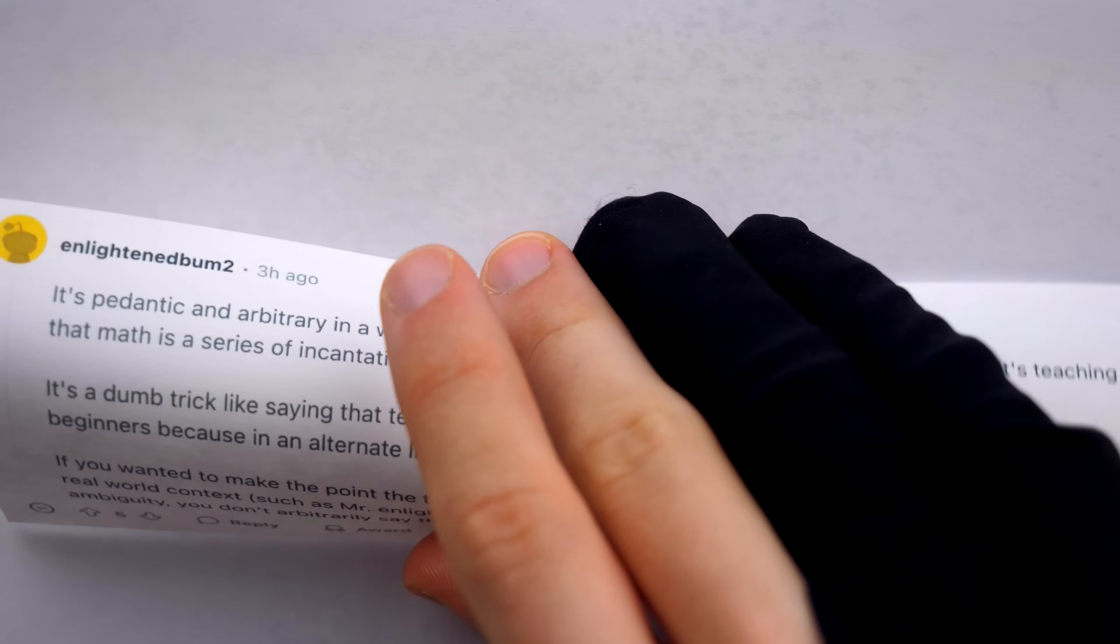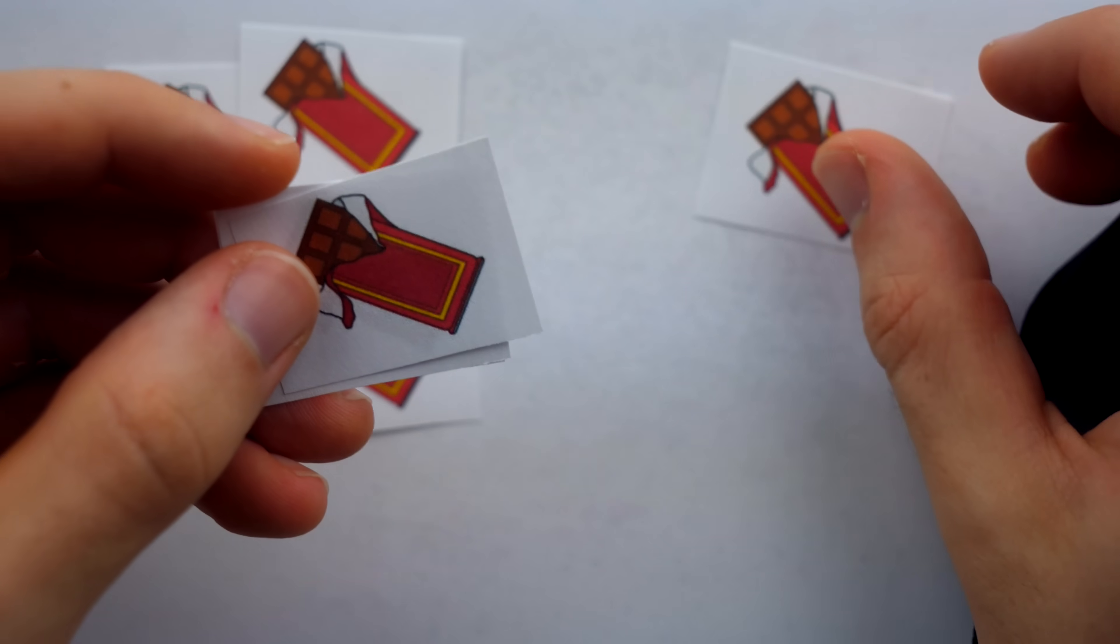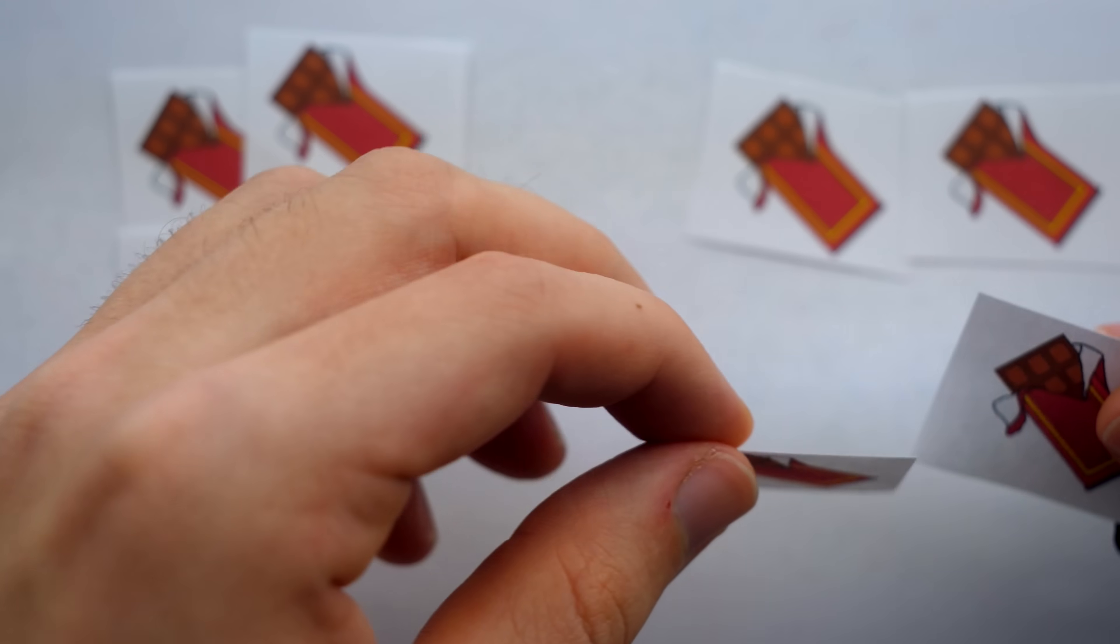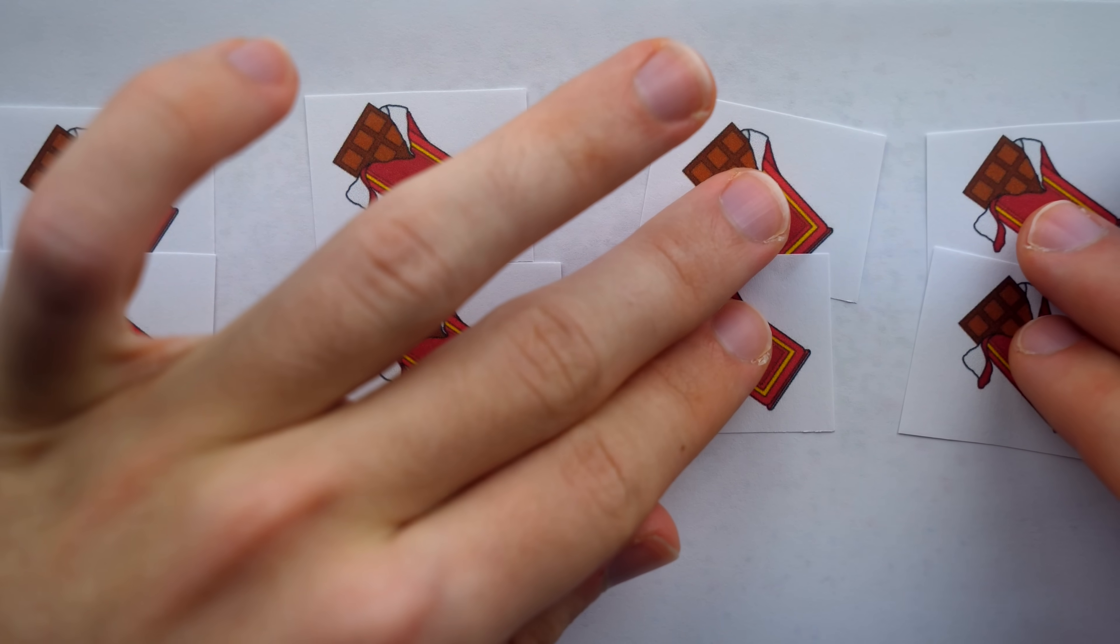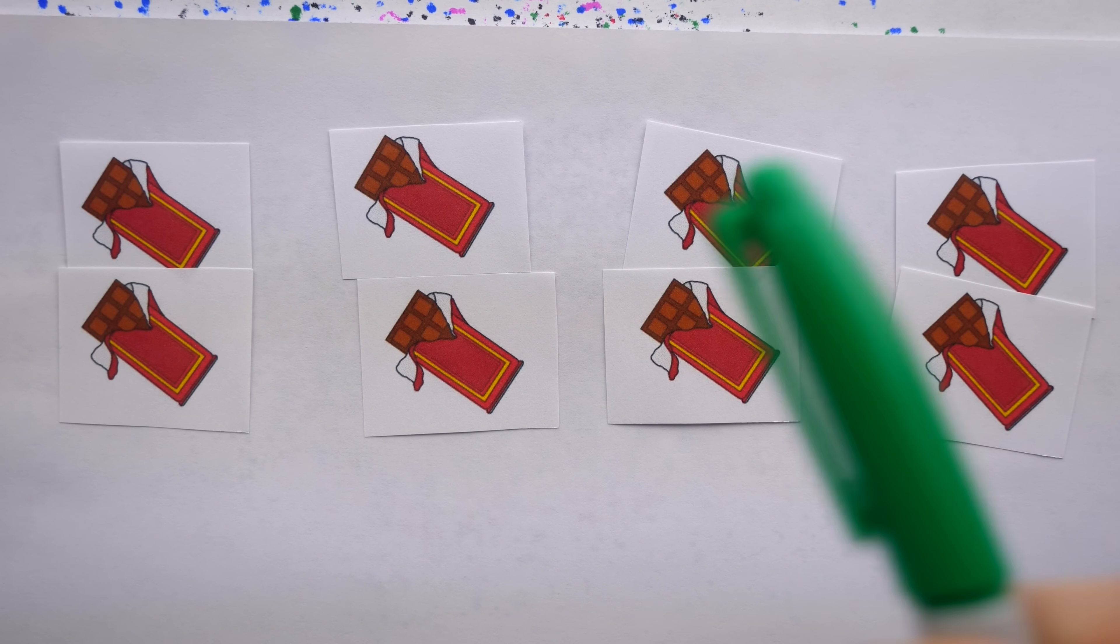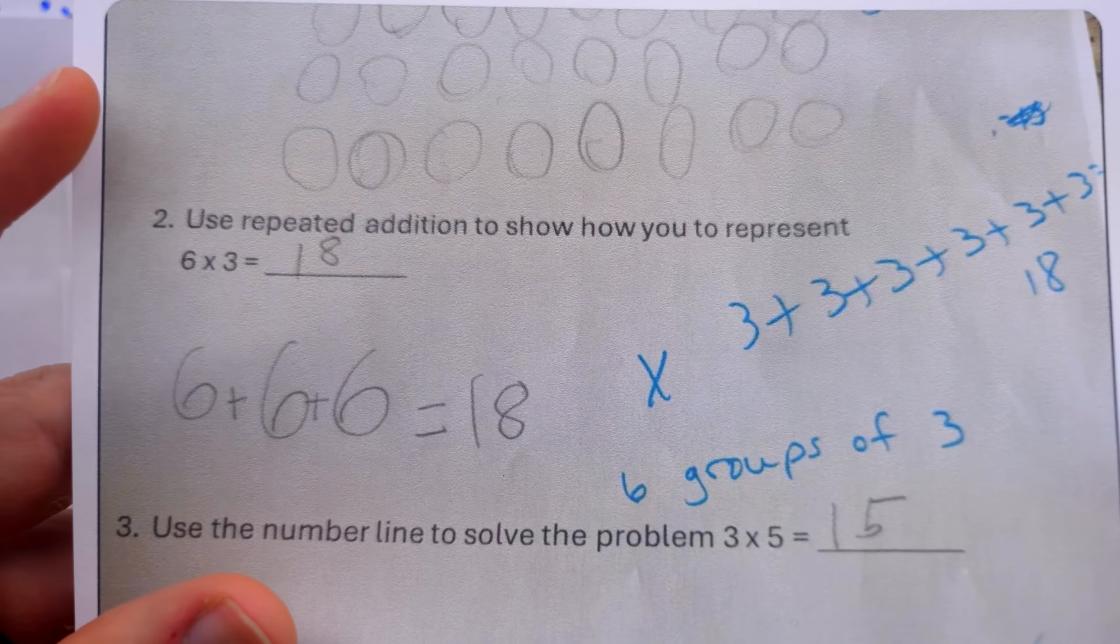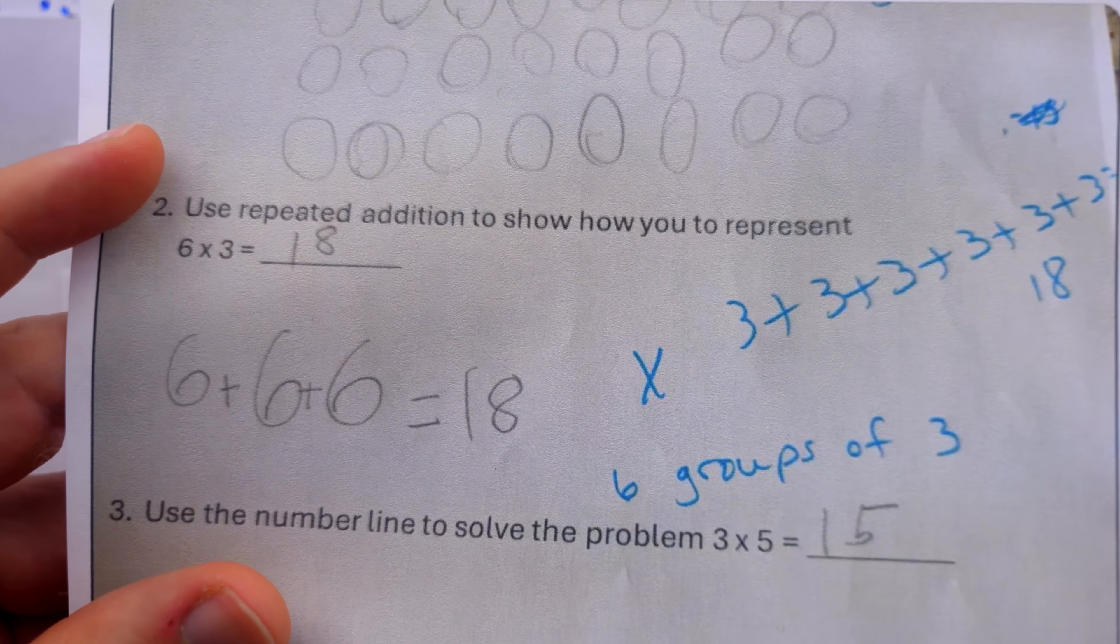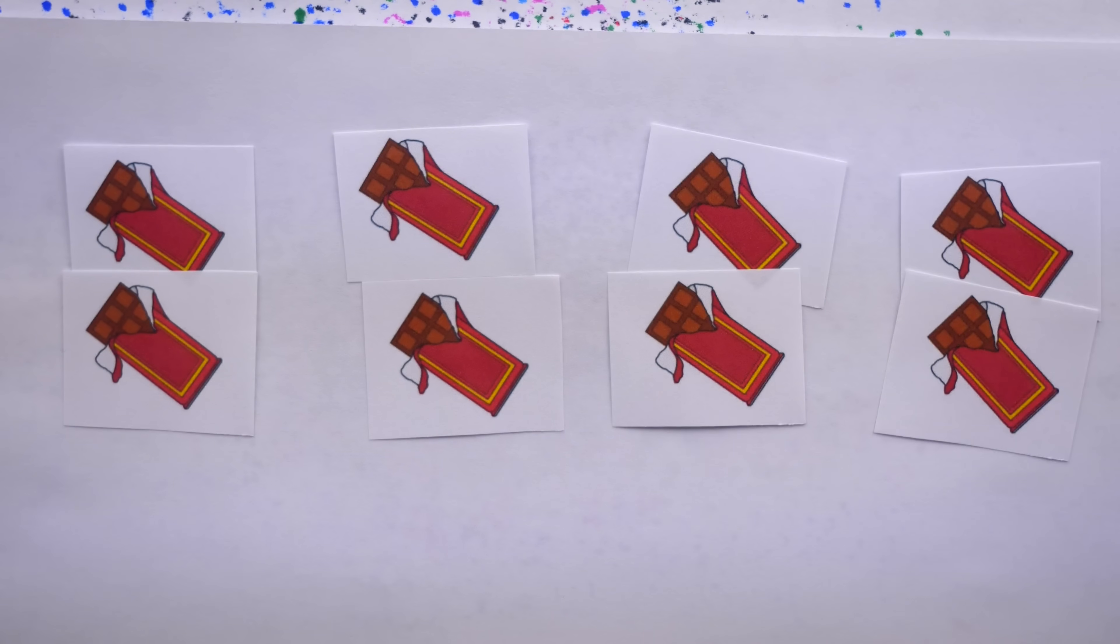I understand Enlightened Bum's point. The real world situation of two kids each with four chocolate bars is certainly distinct from the situation of four kids each with two chocolate bars. Even though each situation involves eight chocolate bars, they are meaningfully distinct. And if there was some context like that, then I don't think anyone would argue with the teacher for taking off points if the student got the representation wrong for a real world situation.